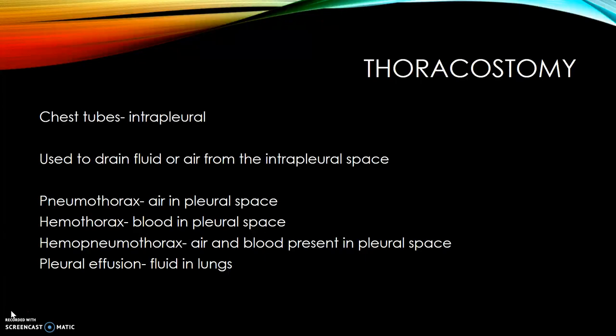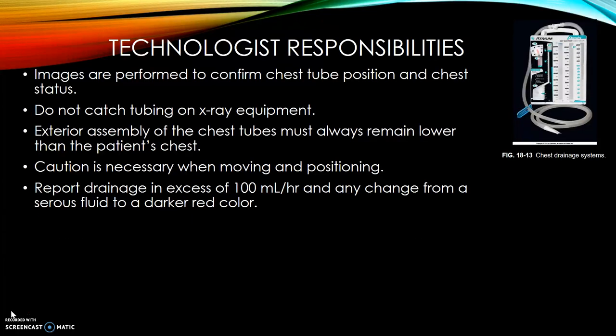Thoracostomy chest tubes are intrapleural and are used to drain fluid or air from the intrapleural space. A pneumothorax is air in the pleural space, a hemothorax is blood in the pleural space, a hemopneumothorax is air and blood both present in the pleural space, and a pleural effusion is fluid in the lungs. The technologist will perform images to confirm chest tube position and chest status. Be sure not to catch tubing on imaging equipment. The exterior assembly must always remain lower than the patient's chest for proper drainage. Report any drainage in excess of 100 milliliters per hour and any change from serous fluid to a darker or red color.